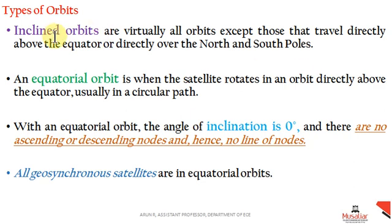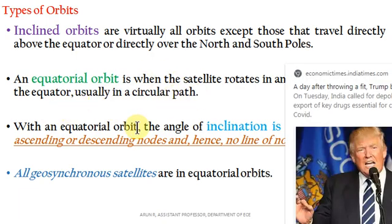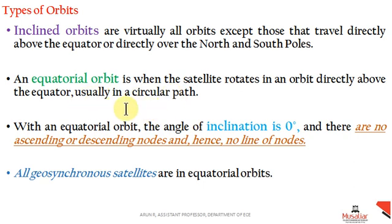An inclined orbit is one that is at some angle above the earth's equator, neither directly over the equator nor directly over the north and south poles. An equatorial orbit is one where the satellite orbits directly above the equator. Usually the equatorial orbit is circular.